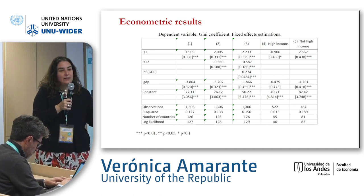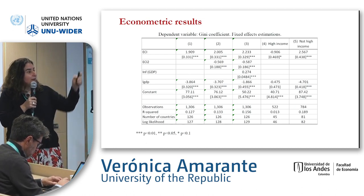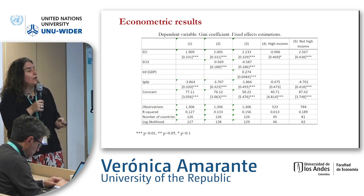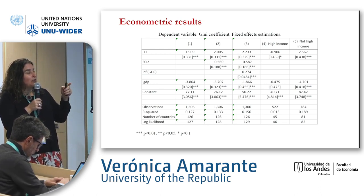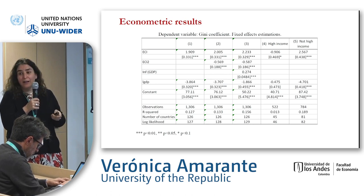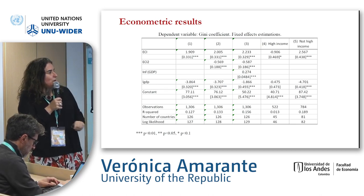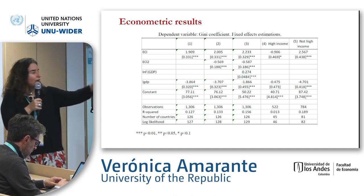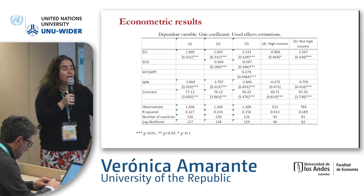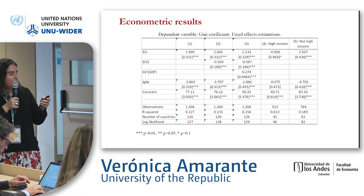Trying to understand this difference with the previous literature, we consider economic complexity in a non-linear way. The first column just replicates the positive linear relation. In the second column, we include the quadratic term, and in that case we have a positive relation up to a certain level of complexity, and then a negative relationship — similar to what previous studies found. When we split our sample between high-income and non-high-income countries, we get a negative relationship for high-income countries and a positive one for non-high-income countries.